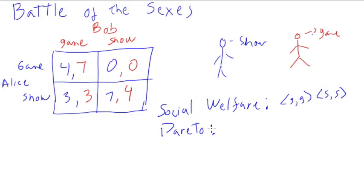And Nash? What about Nash? So let's start with 0,0 here. If Bob goes to the show, clearly Alice will go to the show, so that's not Nash. Similarly, down here, if Bob is going to the game, then Alice will go to the game, so this is not a Nash equilibrium.